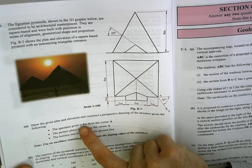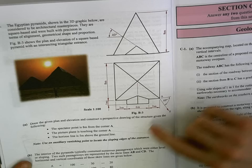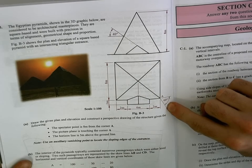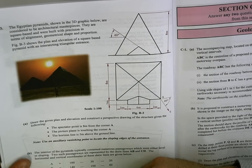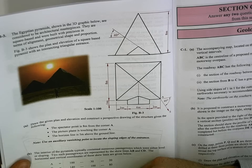So we're given all the information. The spectator point is 8 meters from corner A, as you can see, at an angle of 60 degrees. The picture plane is touching corner A, so that's fine, and the horizon line is 5 meters above the ground line.